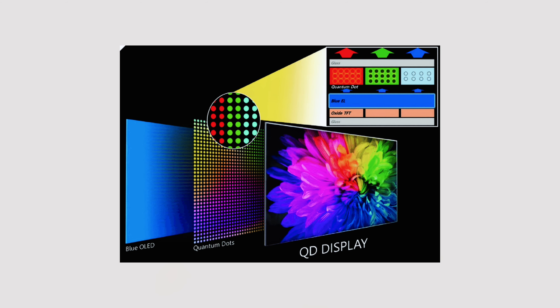Finally, we have quantum dot displays, found in many QLED TVs and very high-end monitors. This technology uses nanoscale semiconductor particles to enhance color accuracy and brightness. All in all, that was a quick high-level overview of the different display screens we get on our devices.